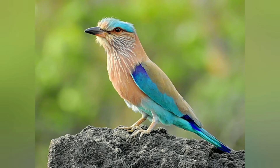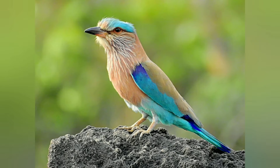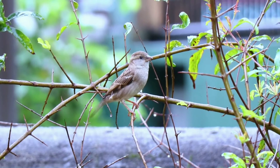Another one is the state bird of Karnataka, that is the Indian Roller or Neelakanta, and its scientific name is Coracias benghalensis. It is a brightly colored bird with various shades of blue on the wings, tail, and belly that are often more prominent in flight. There is a longitudinal white streak on the throat and breast.